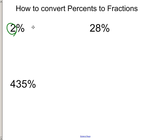So 2%, we take the 2, and we just put it over 100. And then you can simplify it, and that would become 1 50th.